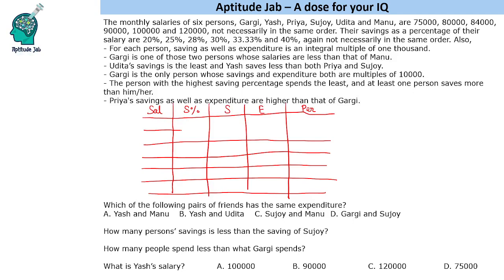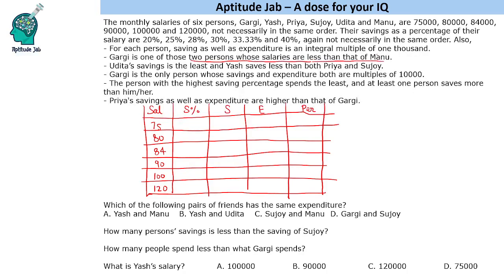Let us read the statements and see where to start. The salaries are multiples of 1000, so we put: 75, 80, 84, 90, 100, and 120 (in thousands). The clue says Gargi is one of the two persons whose salaries are less than that of Manu — meaning two persons have salaries less than Manu's. So Manu's salary must be the third value, and Gargi is one of the two below Manu.